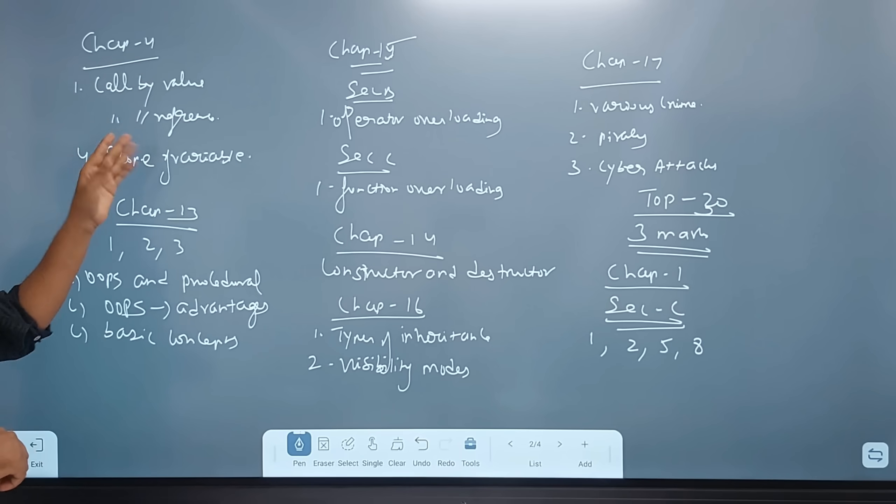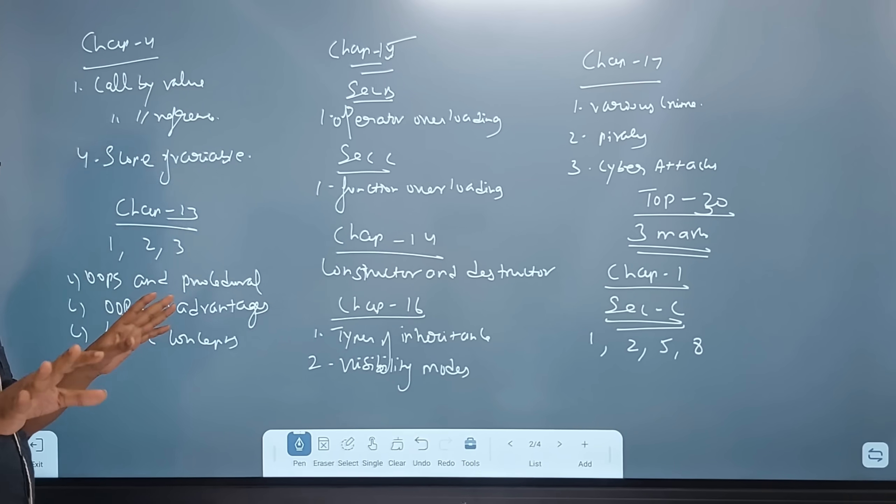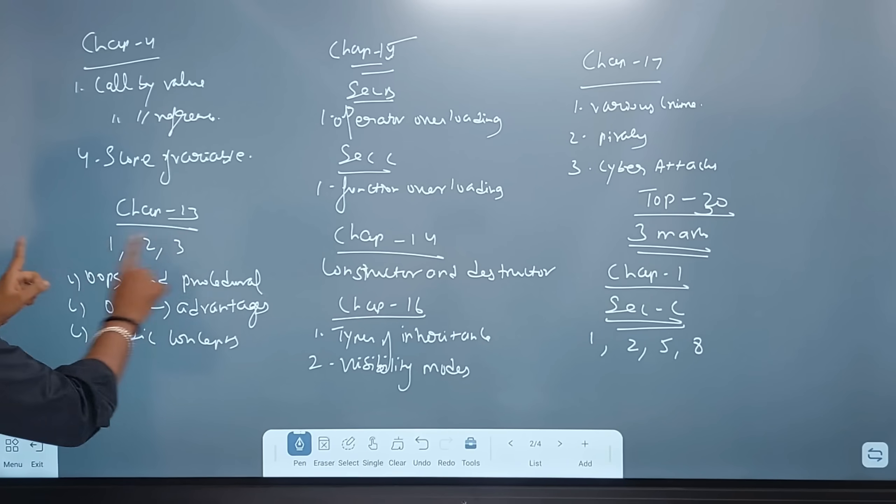Chapter 4 is call by value, call by reference. Scope of variable, fourth question. Chapter 13 is loops and OOP's advantage, basic concepts of OOP.